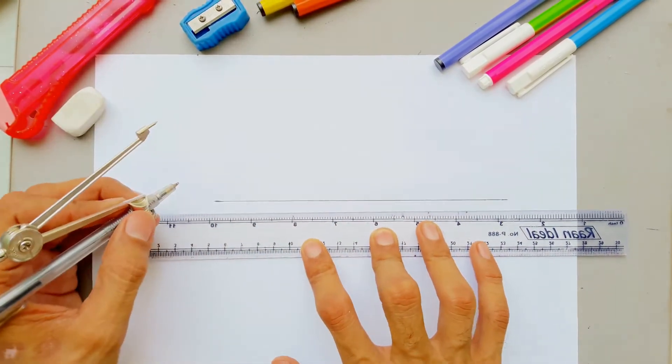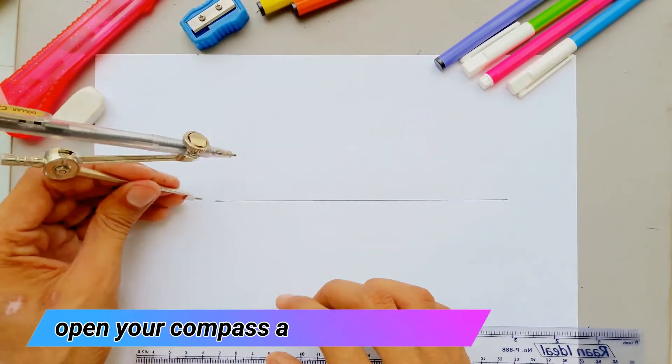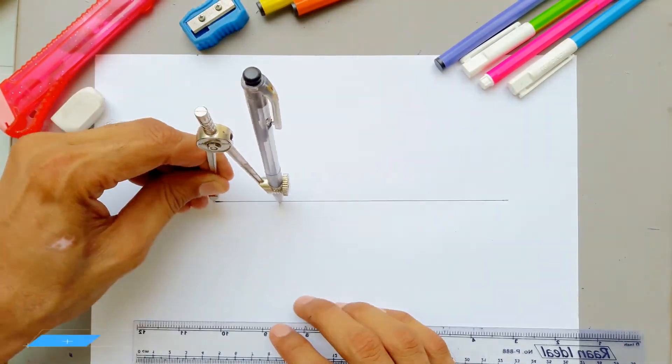Draw a line to divide into equal segments. Now open your compass a little and draw arcs like this.